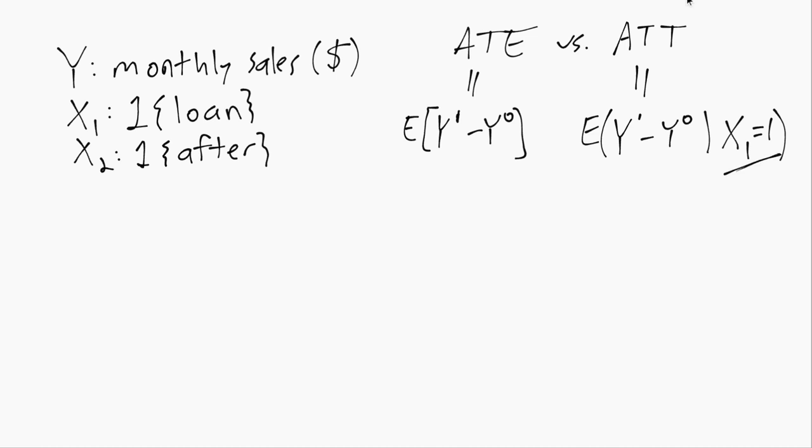In other words, have X1 equals 1. So we might expect the ATT to be higher than the ATE.